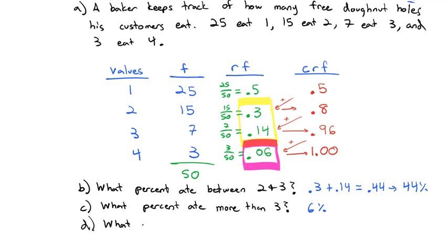Finally, what percent ate at most 3? Well, I'll mark them in blue here. At most 3 is everybody else. I could add those all together, but what you might notice is that everybody else excludes the 6%. So it might be easier to say we've got 100% as everybody. Exclude the 6% that are more than 3. And that leaves us with 94% ate at most 3 donut holes.